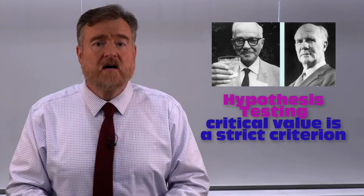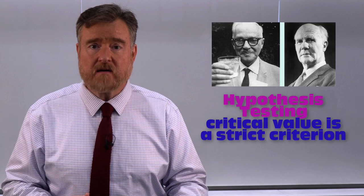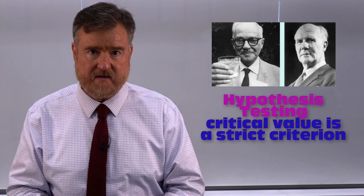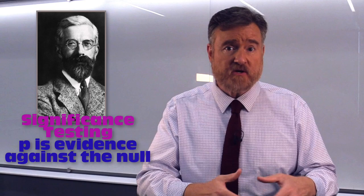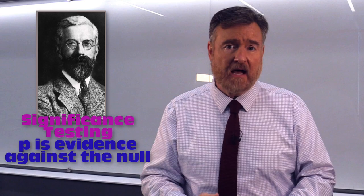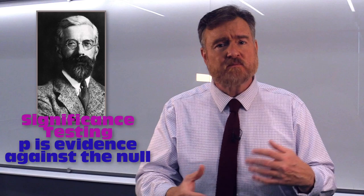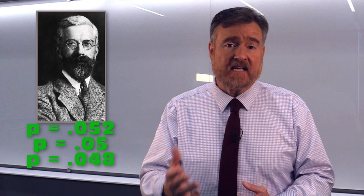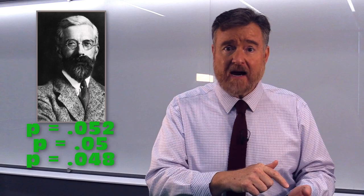Some researchers still adhere to a very strict criterion using hypothesis testing — the approach of Neyman and Pearson. This is most appropriate when doing extensive testing using multiple hypothesis tests where controlling error rate is critical. At other times, researchers use Ronald Fisher's significance testing, where p-values report a level of evidence against the null hypothesis. This is most appropriate for single comparisons, small sample sizes, or exploratory research. In that case, 0.05 provides exactly the same evidence as 0.052 or 0.048 — those fluctuations simply reflect random error and sample size.